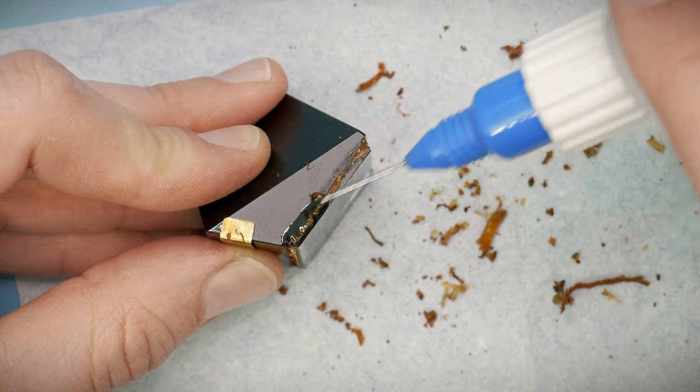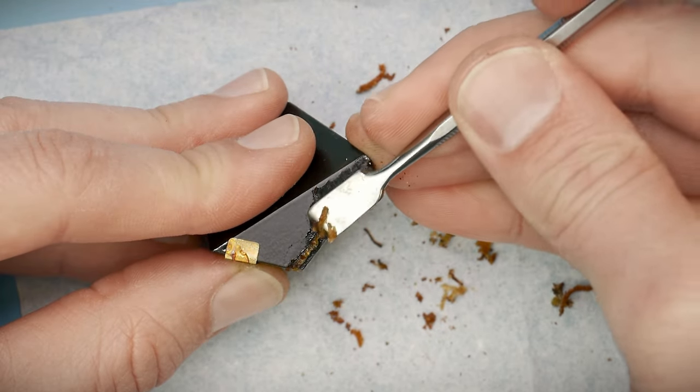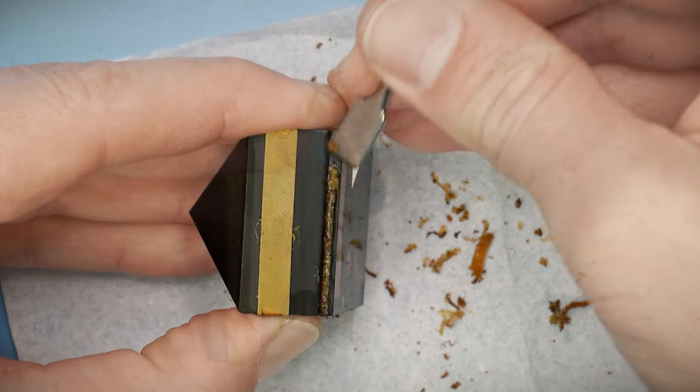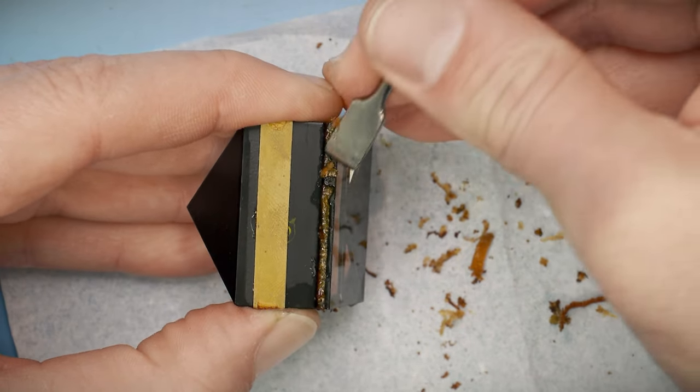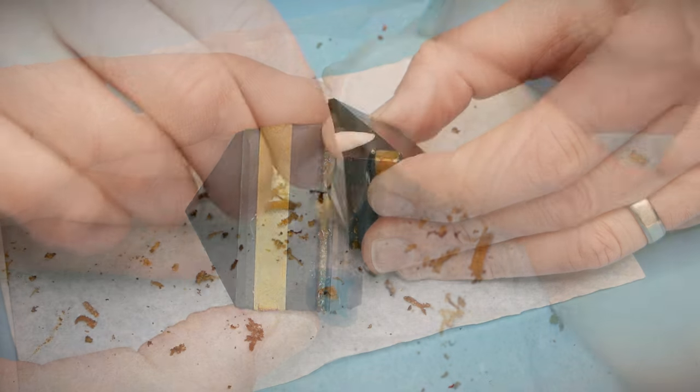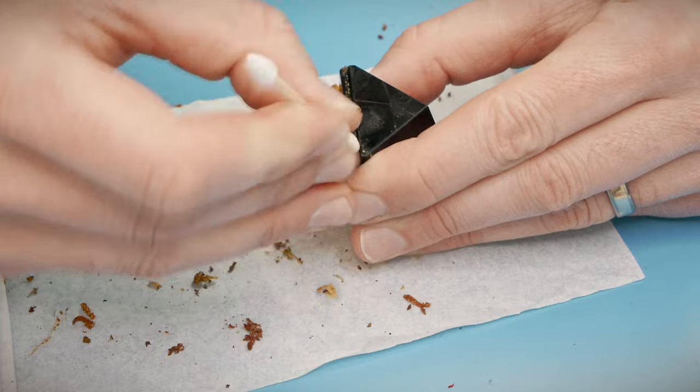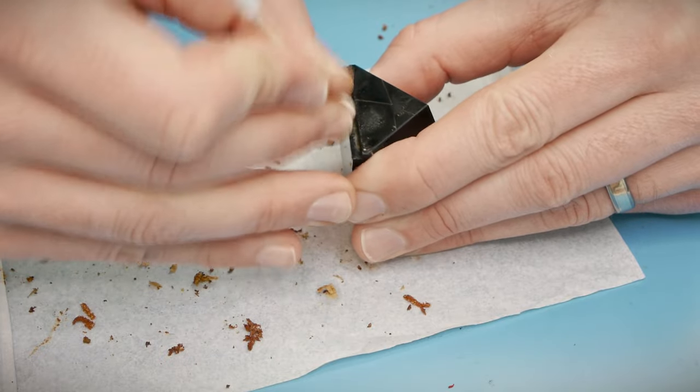A common failure of SLR cameras is desilvering of the prism, which is often caused by old foam degrading the silvered coating on the outside of the glass. It creates kind of a spidery black obstruction in the viewfinder, which doesn't directly affect the function of the camera, but it is quite distracting.